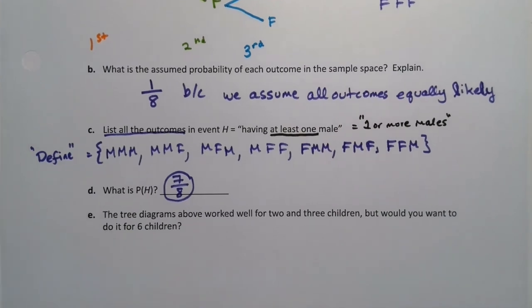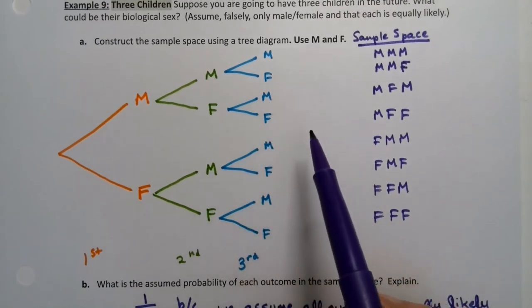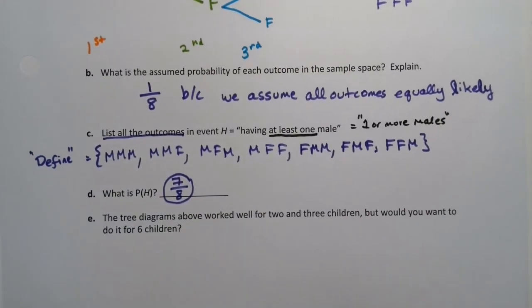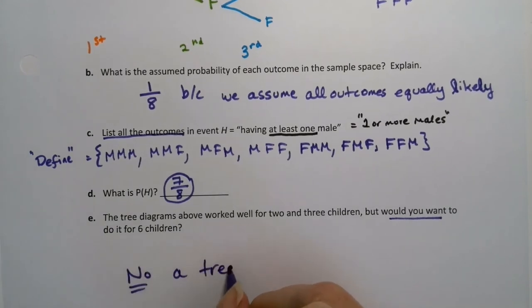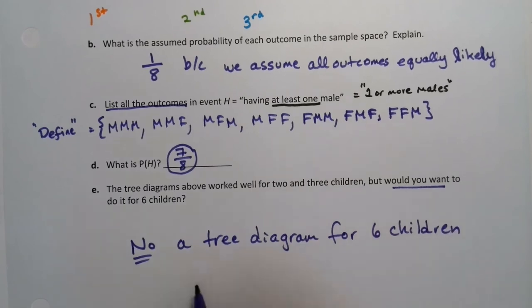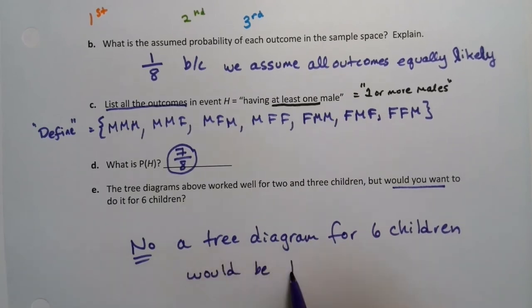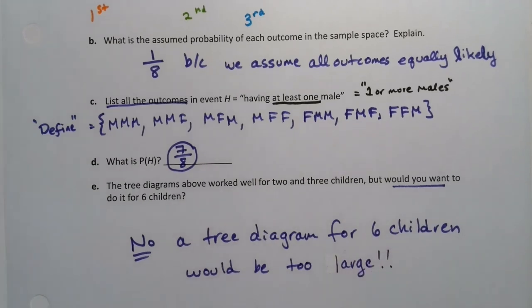Alright, that tree diagram was wonderful. I mean, it wasn't too bad. And it works well for two children, you can imagine, or three children. But what would you do if you wanted to make six children? Right, that would be awful. Because we were already running out of space at three children. I mean, we could maybe do four, but after that we're kind of in trouble. So it would be a huge diagram. So it's saying, would you want to do this for six children? No. A tree diagram for six children would be huge. Too large. Now, how large would it be? Well, we could actually find that out with something else called the multiplication rule of counting.